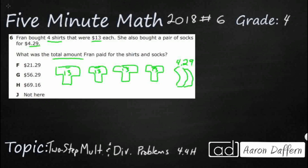So those socks are $4.29. If I wanted to add all of these up, I could. Another way would be to multiply, because we've got four sets of 13. So we can do four sets of 13 and then add the $4.29. That's one option, or we can just add all four. Let's do both and make sure we get the same answer, since we're looking for the total. The total is our unknown.